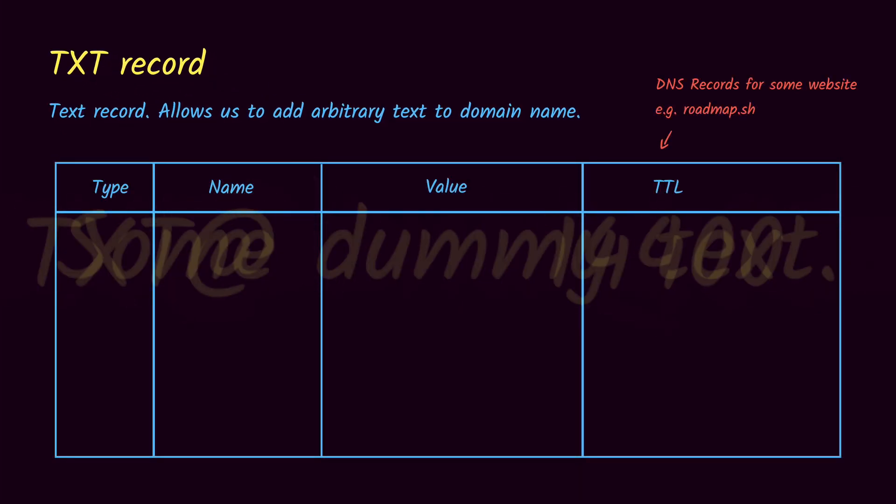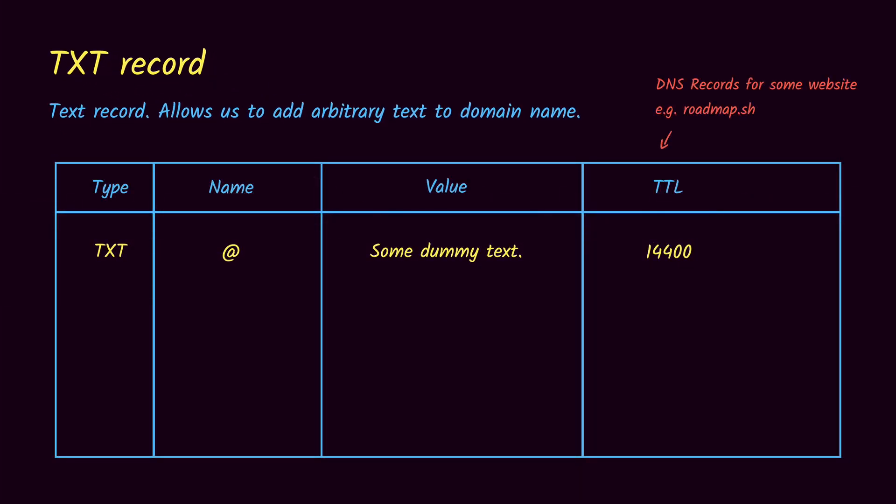The next one is the TXT record, or text record, which allows us to assign some arbitrary text to a domain name. For example, a text record with some dummy text assigned to the domain name. TXT records are mostly used by third-party services that want to verify ownership of the domain name. For example, if you have used AWS SES for sending emails, they give you a special code to put in the TXT record and then fetch it from the domain name to verify that you actually own the website.